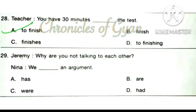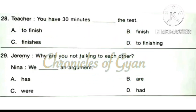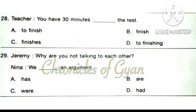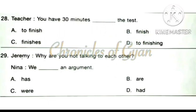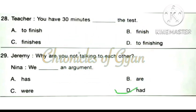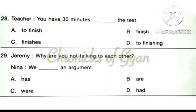Question 29 — Jeremy: Why are you not talking to each other? Neena says: We dash an argument. The correct answer is option D: Had. We had an argument.